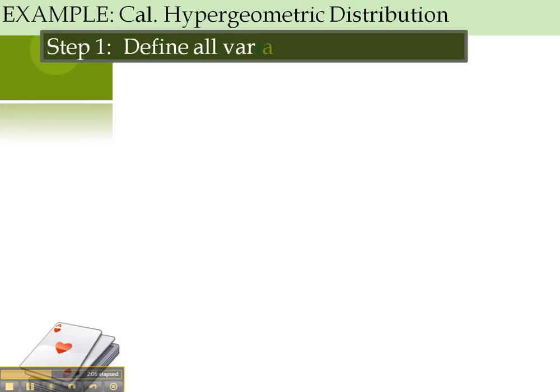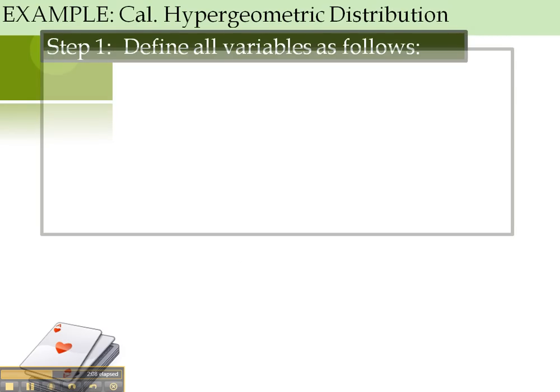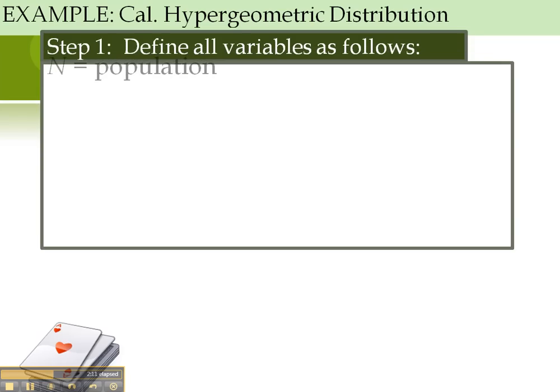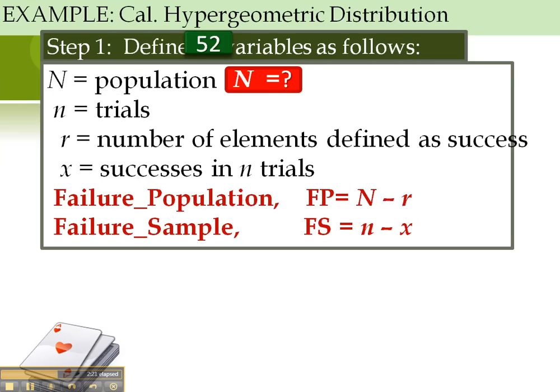Now, we return to the steps of our formula, and we apply those. First, we define all of our variables because this will simplify our calculation. Capital N is the population. Lowercase n, the trials, and I bring the rest of the variables up. Now, we said that there are 52 cards in a deck. So, capital N equals 52.